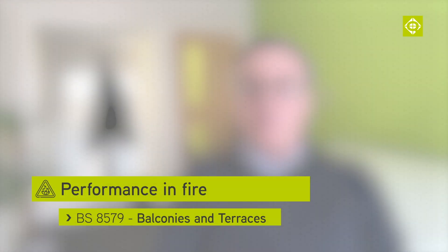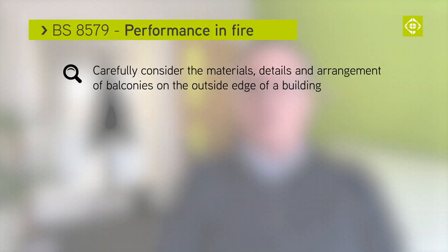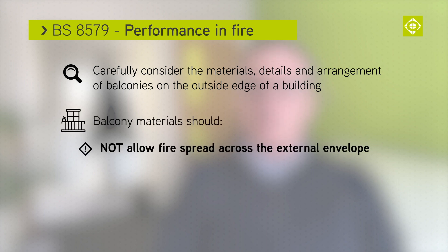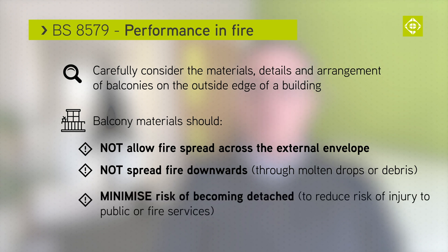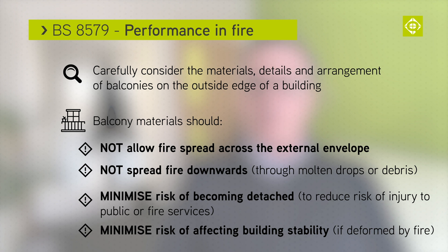Performance in fire. This is a topic that has been in the news in recent years following fires that developed on apartment balconies and then spread up the outside of the building. So consider the materials, details, and arrangement of balconies on the outside face of a building. Balcony materials should not allow fire spread across the external envelope, not spread fire downwards through molten droplets or debris, minimise the risk of becoming detached which could injure the public or firefighters, and minimise the risk of affecting the stability of the building if deformed in the event of fire. Balconies on floors over 11 metres, and any building with stacked balconies irrespective of height, should be constructed of non-combustible materials.